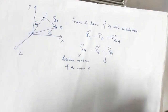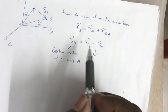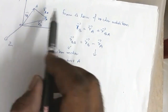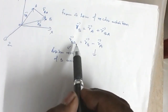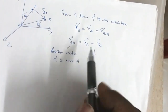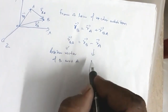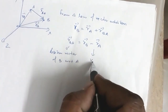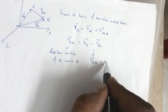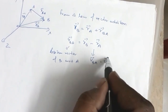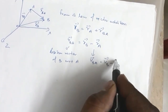If I differentiate this with respect to time — since A and B are moving, their position vectors undergo change — I get VBA = VB − VA. So the velocity of B with respect to A equals velocity of B minus velocity of A.